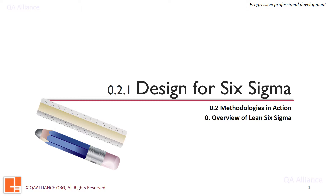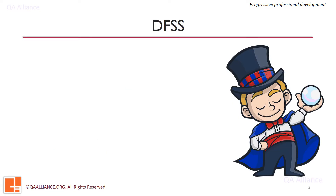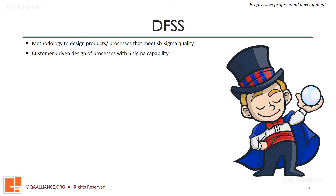This lesson is going to cover one such methodology, that is Design for Six Sigma. Design for Six Sigma, or DFSS, is a systematic methodology utilizing tools, techniques and measurements to design products and processes that meet customer expectations at Six Sigma quality levels. This means that the customer-driven design of processes and products is done with a Six Sigma capability. With the help of DFSS, we are predicting design quality upfront, and top-down requirements flow down and are matched by capability flow up.